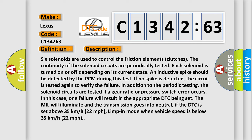the circuit is tested again to verify the failure. In addition to the periodic testing, the solenoid circuits are tested if a gear ratio or pressure switch error occurs. In this case, one failure will result in the appropriate DTC being set. The MIL will illuminate and the transmission goes into neutral.